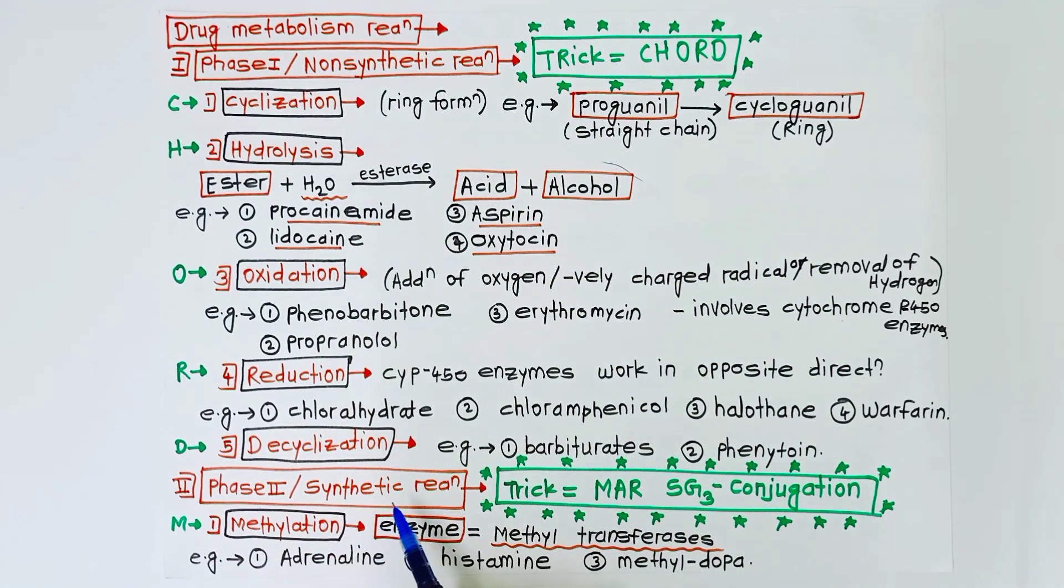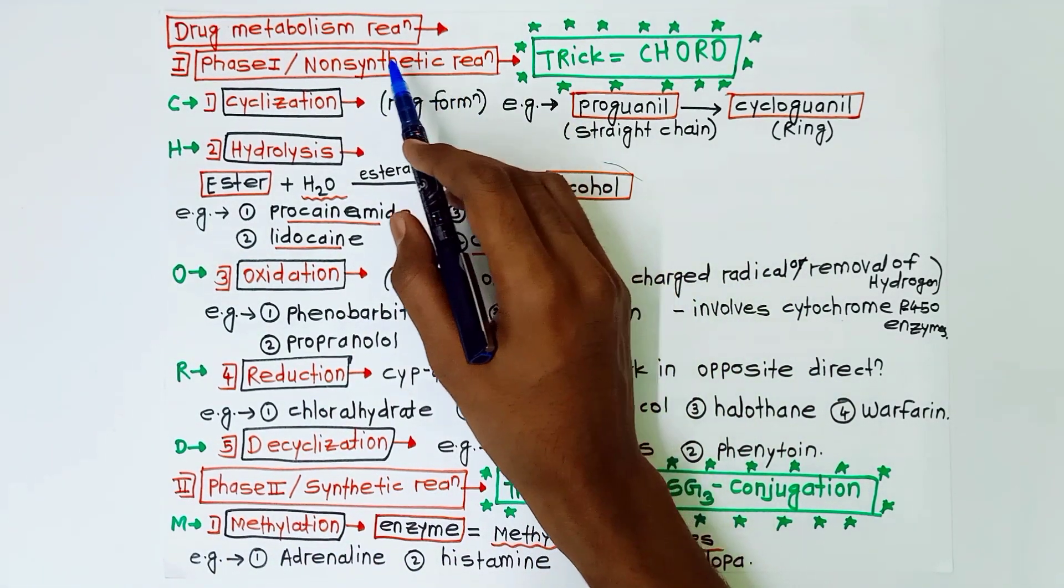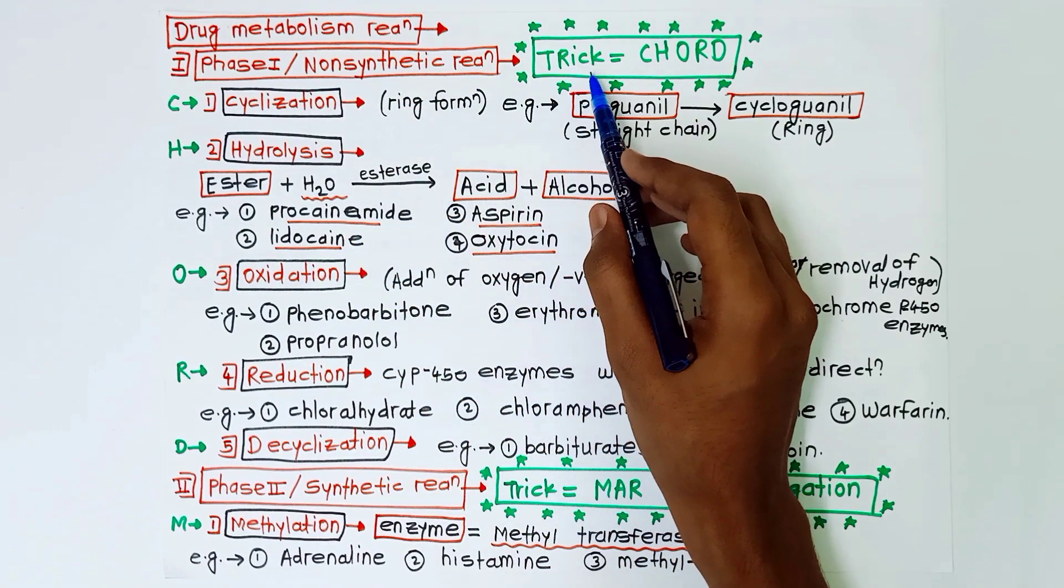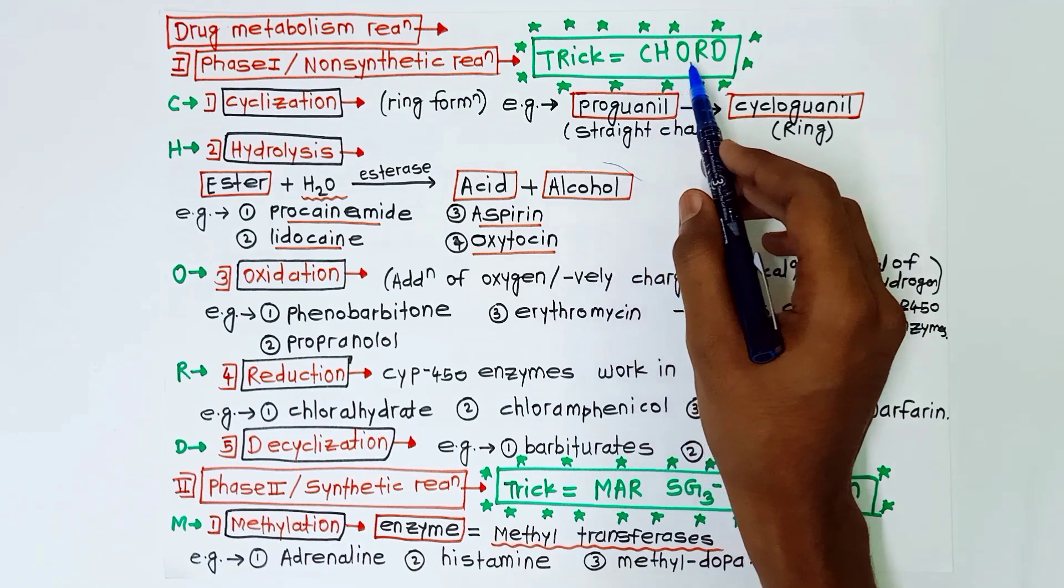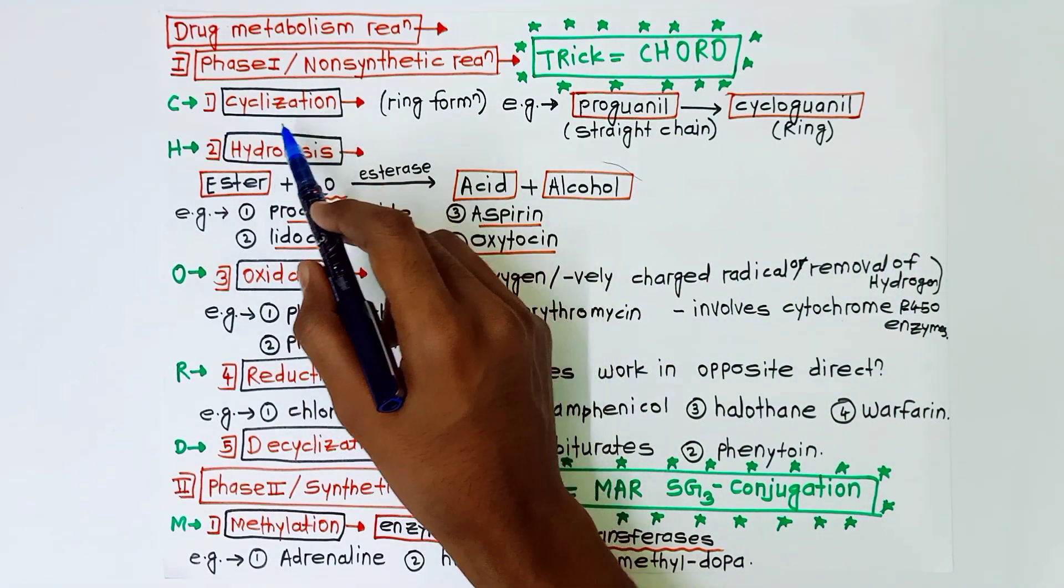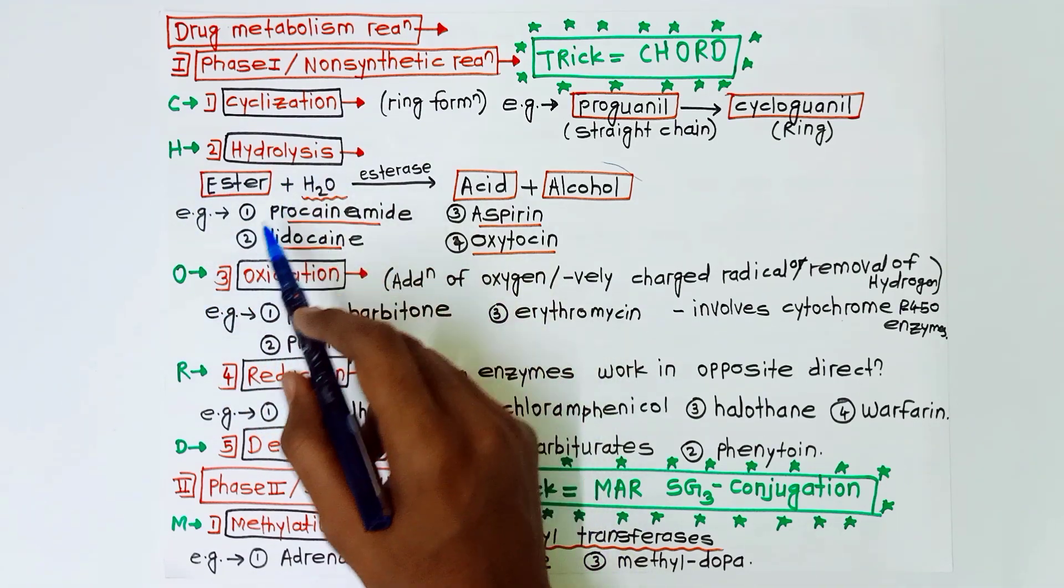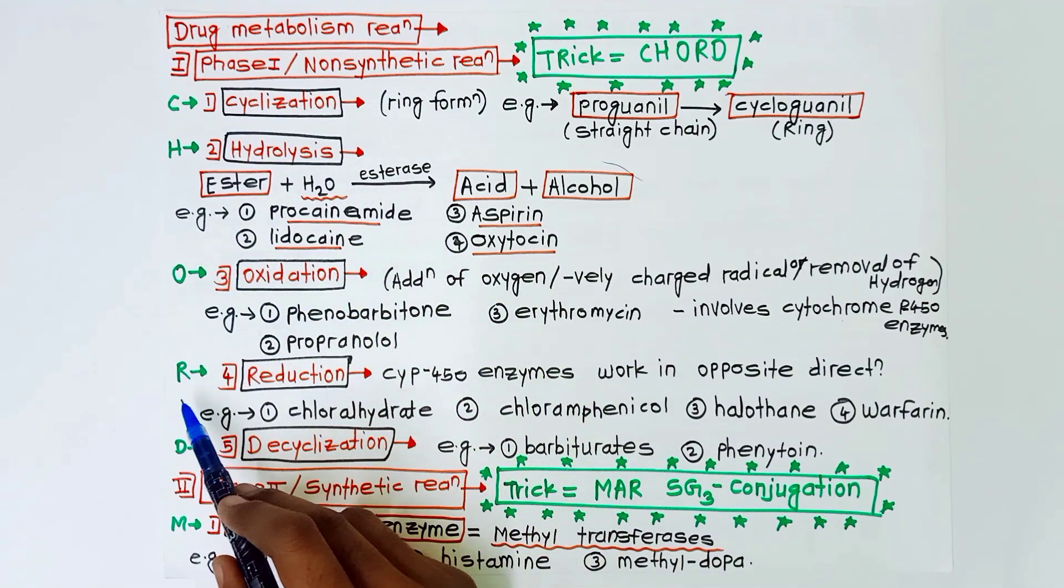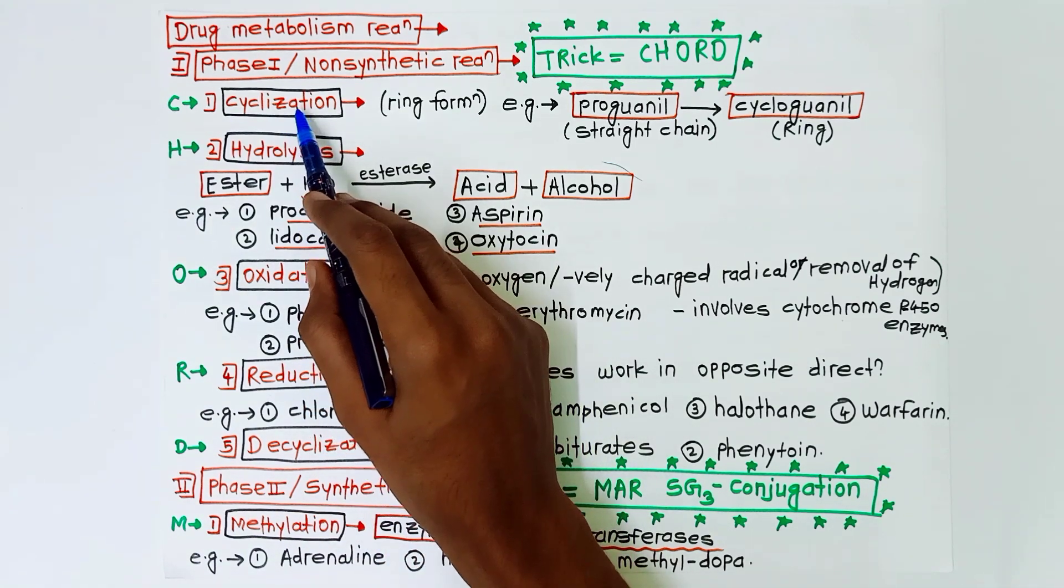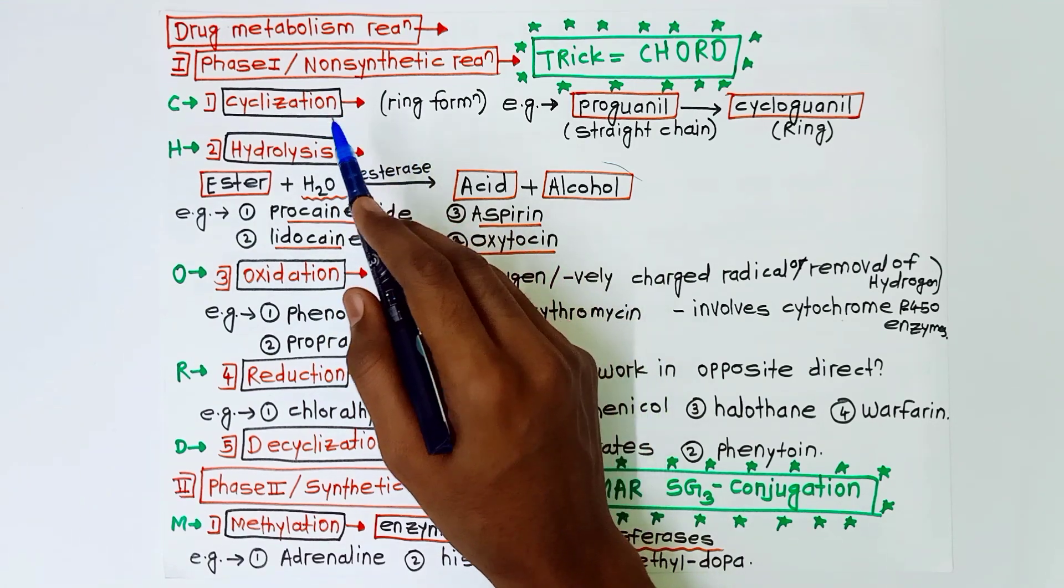First of all, phase 1 reactions or non-synthetic reactions. The trick to remember this is CHORD. C for cyclization, H for hydrolysis, O for oxidation, R for reduction, and D for decyclization.